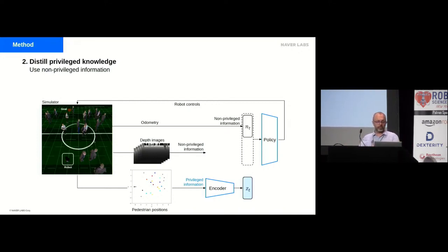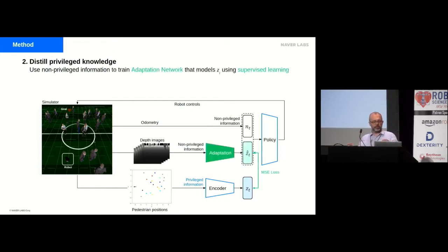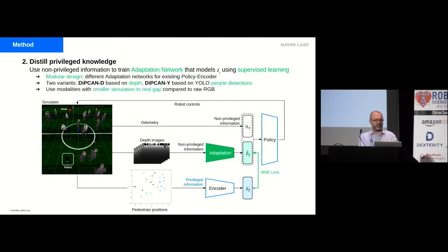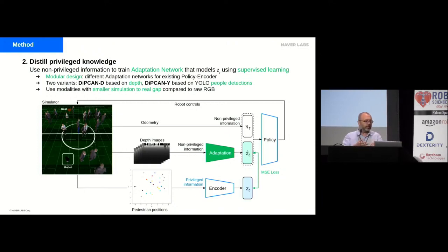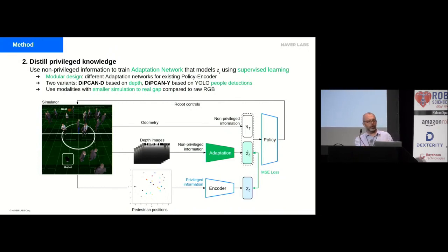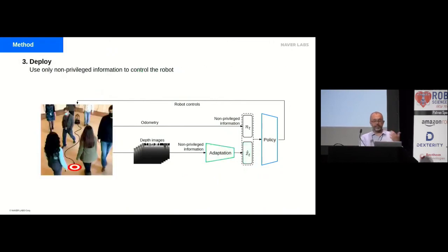In the second step, we freeze the previously trained network and train an adaptation network that models this embedding z_t using supervised learning from non-privileged information such as depth image history. This design is modular — you can have different adaptation networks for existing policy-encoder combinations. We developed two variants: DiPCAN-D based on depth images, and DiPCAN-Y based on YOLO people detections. We use modalities with a smaller simulation-to-real gap compared to raw RGB to improve real robot transfer. At deployment, we use only the policy and adaptation network, exploiting only non-privileged information: images and odometry.